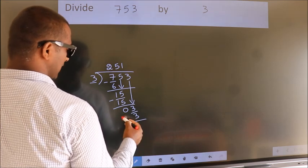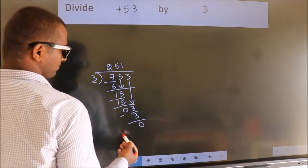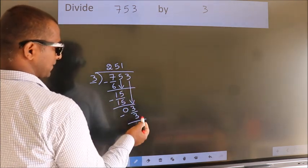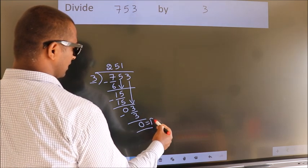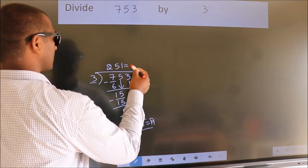Now we subtract. We get 0. No more numbers to bring down, so we stop here. This is our remainder. This is our quotient.